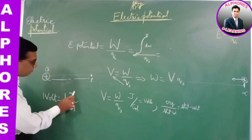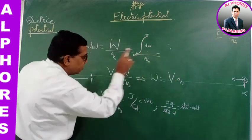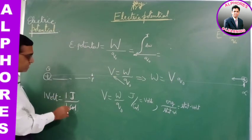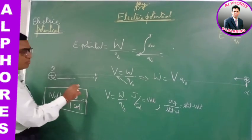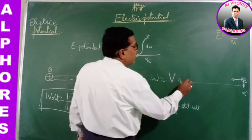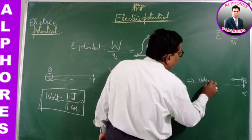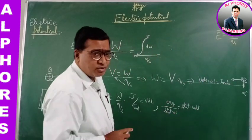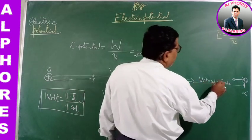If 1 joule of work is done in moving a unit positive test charge from infinity to a point in the field, then the electric potential at that point is 1 volt. So 1 joule per 1 coulomb is called 1 volt. The unit for work done can also be written as volt × coulomb, so volt × coulomb = joule.